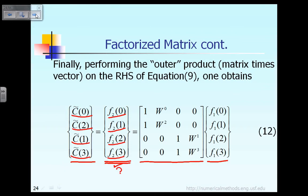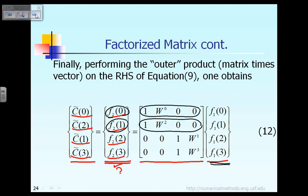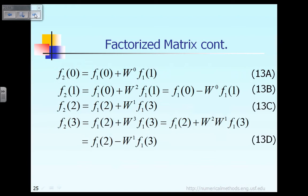For now, let us focus on how to compute vector f2 from the matrix-times-vector in equation 12. To calculate f2(0), we take the first row of the matrix and multiply with vector f1. To calculate f2(1), we take the second row times vector f1. Similarly, we calculate f2(2) and f2(3). The details are shown in the next slide, where equations 13a through 13d are presented.